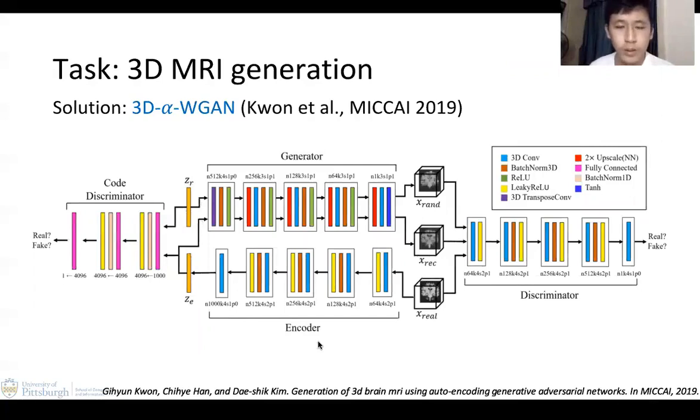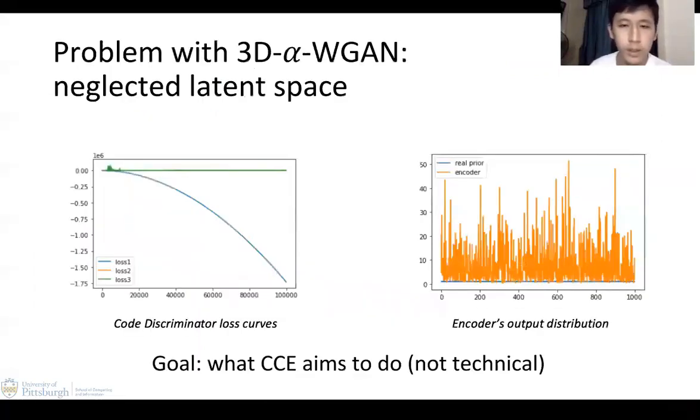Based on our results, this model solves the mode collapse, but its latent space convergence is not as good as it promises. Shown in the first image, we can say that the learning of the latent space has essentially diverged because the blue curve is the loss curve of the code discriminator and it diverges out of range from the loss curves of the discriminator and the generator. We also sample from the output of the encoder, and it turns out that encoder's outputs are in a completely different scale from the real Gaussian noises.